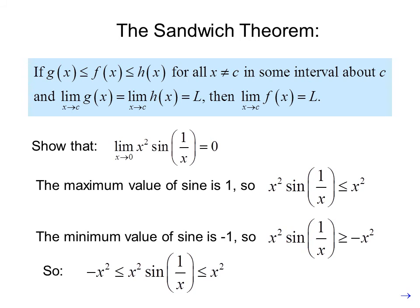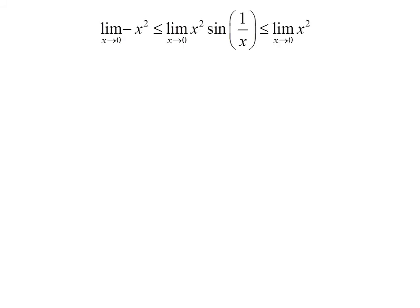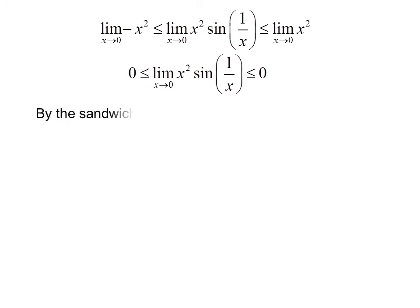The expression x squared sine(1/x) is sandwiched — or squeezed — between negative x squared and positive x squared. Taking the limit as x approaches 0 of all three expressions: 0 is less than or equal to the limit as x approaches 0 of x squared sine(1/x), which is less than or equal to 0. Since the limit of negative x squared is 0 and the limit of positive x squared is 0, and our original expression is sandwiched in between, it must also be 0. By the Sandwich Theorem, the limit as x approaches 0 of x squared sine(1/x) equals 0.